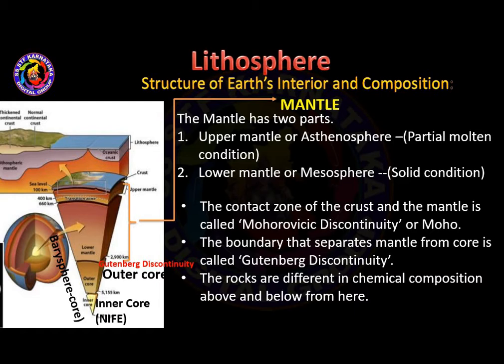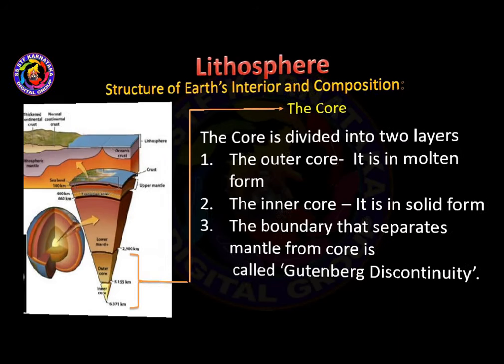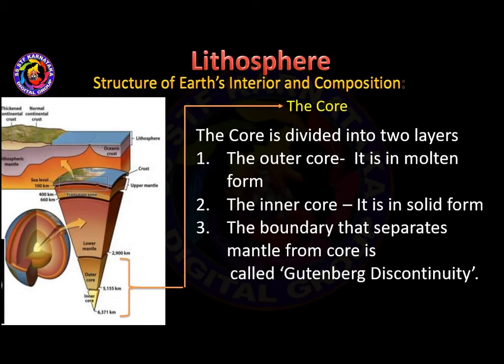As you can see here, the core is the innermost layer of the Earth, with a depth of 6371 km. The core contains nickel and ferrous (iron), so it is called NIFE. The outer core is in molten form and the inner core is in solid form.